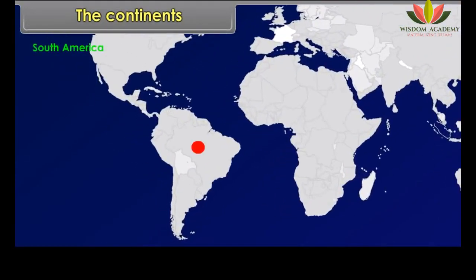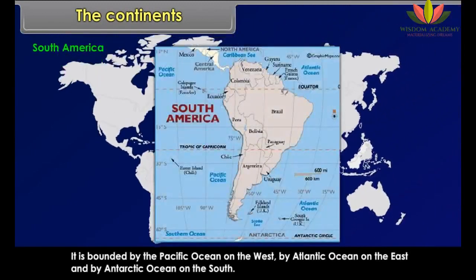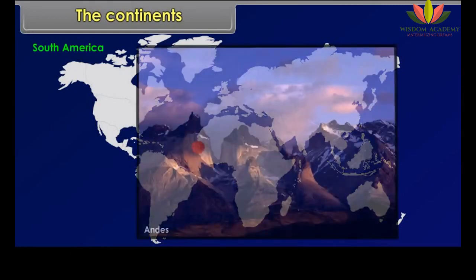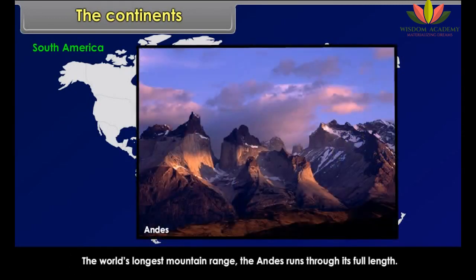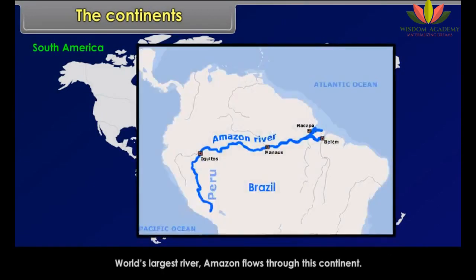South America lies mostly in the southern hemisphere. It is bounded by the Pacific Ocean on the west, the Atlantic Ocean on the east, and the Antarctic Ocean on the south. The world's longest mountain range, the Andes, runs through its full length. The world's largest river, the Amazon, flows through this continent.